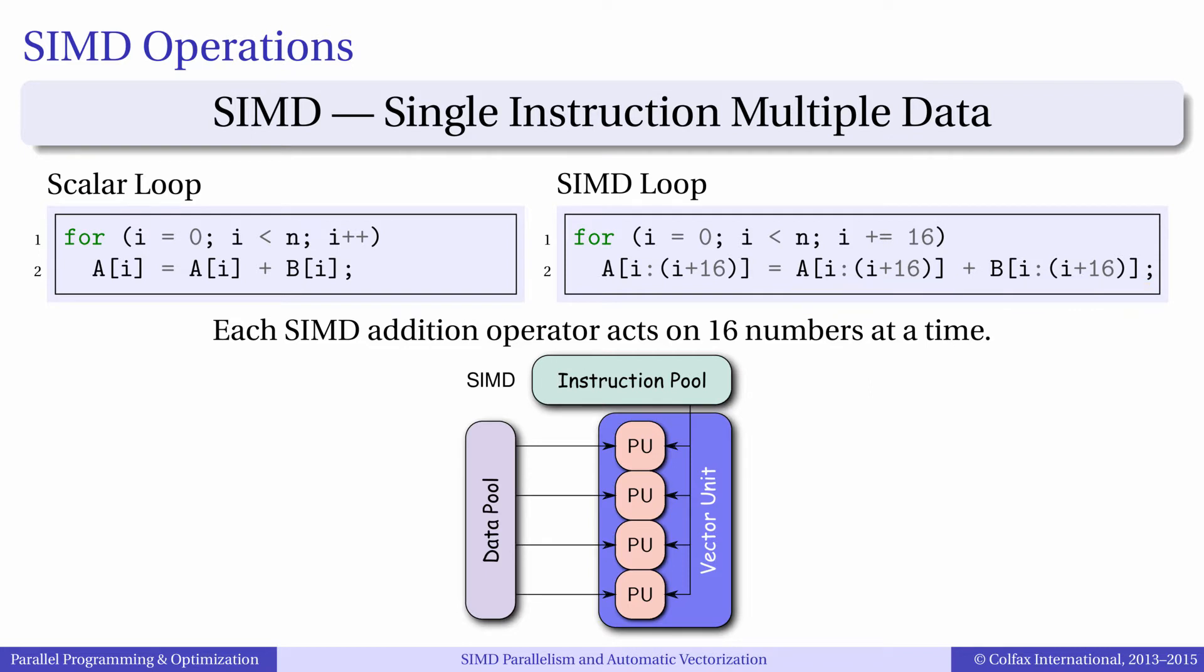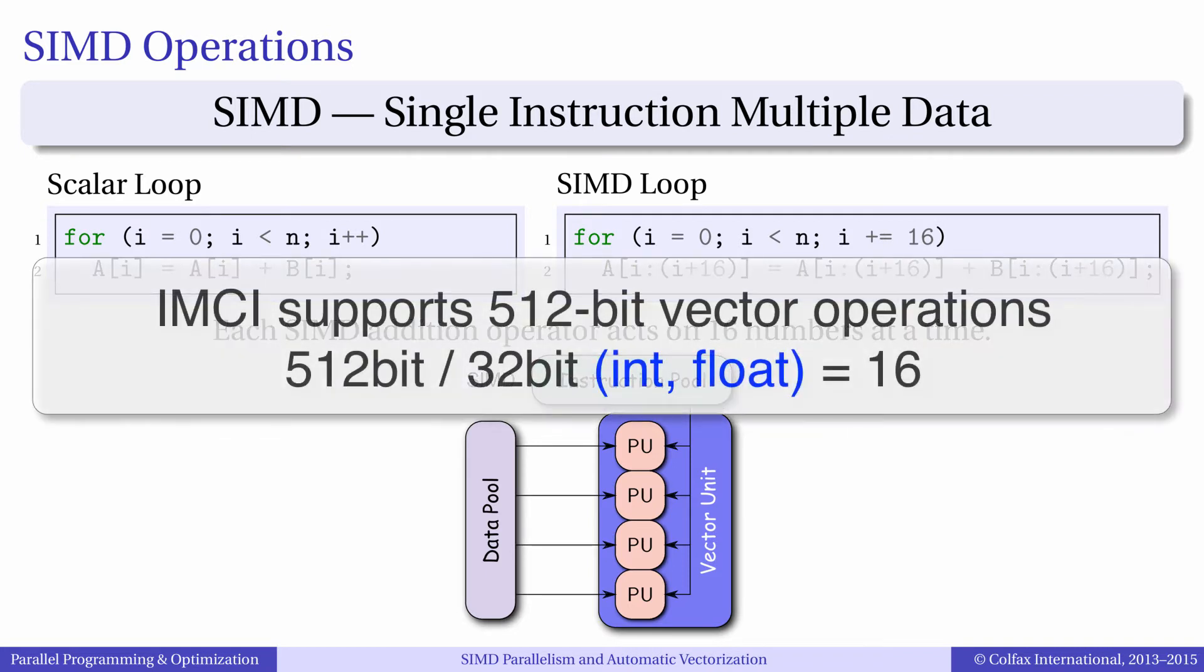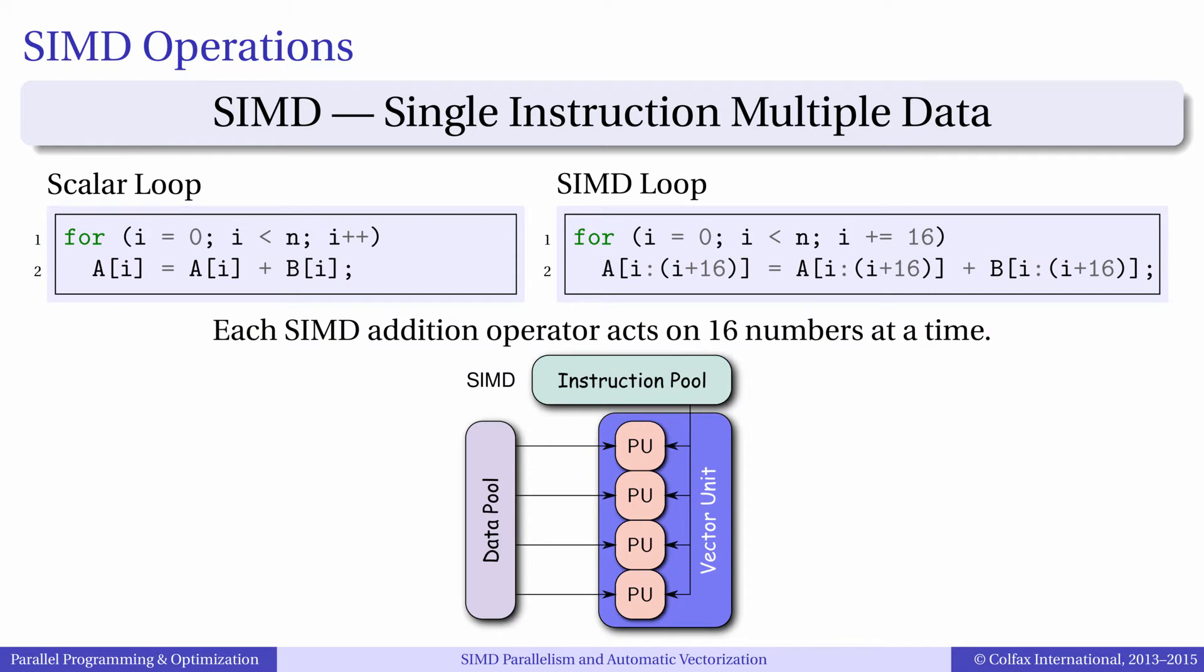A processor such as Intel Xeon Phi with 16-wide SIMD instruction support can perform this 16-wide addition as one operation. This effectively accelerates calculations by a factor of 16 compared to code that uses scalar instructions. Another way to look at it is that if your application does not use vector instructions where they could be used, you may be using only one-sixteenth of the arithmetic performance available on your processor.